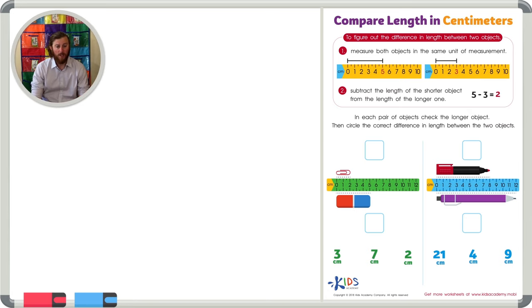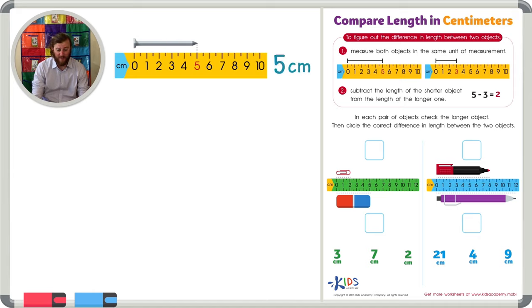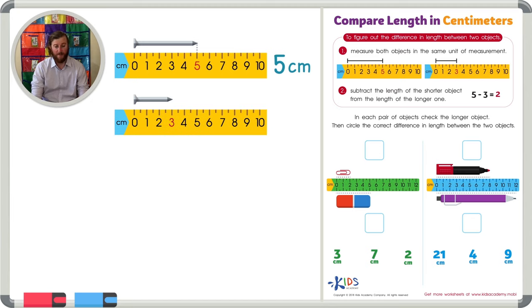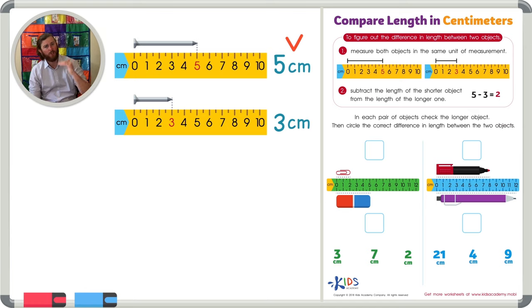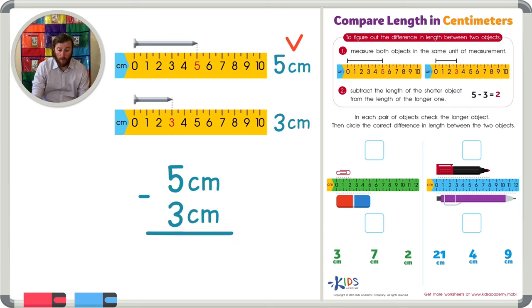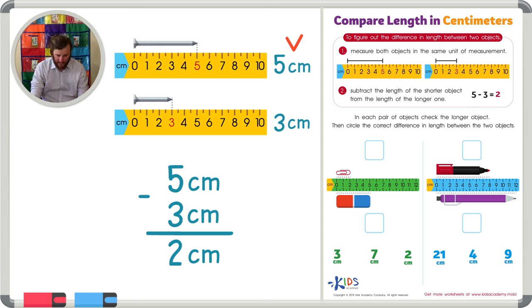Let's look at an example. Say we measure two different nails: the first nail is five centimeters long and the second nail is three centimeters long. It's easy to tell the five centimeter nail is longer, but how much longer? We subtract — always put the bigger number on top and the shorter on bottom. Five minus three equals two, so the difference in length between these two objects is two centimeters.